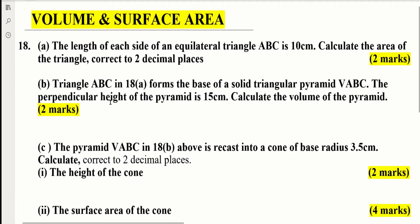The length of each side of an equilateral triangle ABC is 10 cm. Calculate the area of the triangle correct to two decimal places. Two marks.